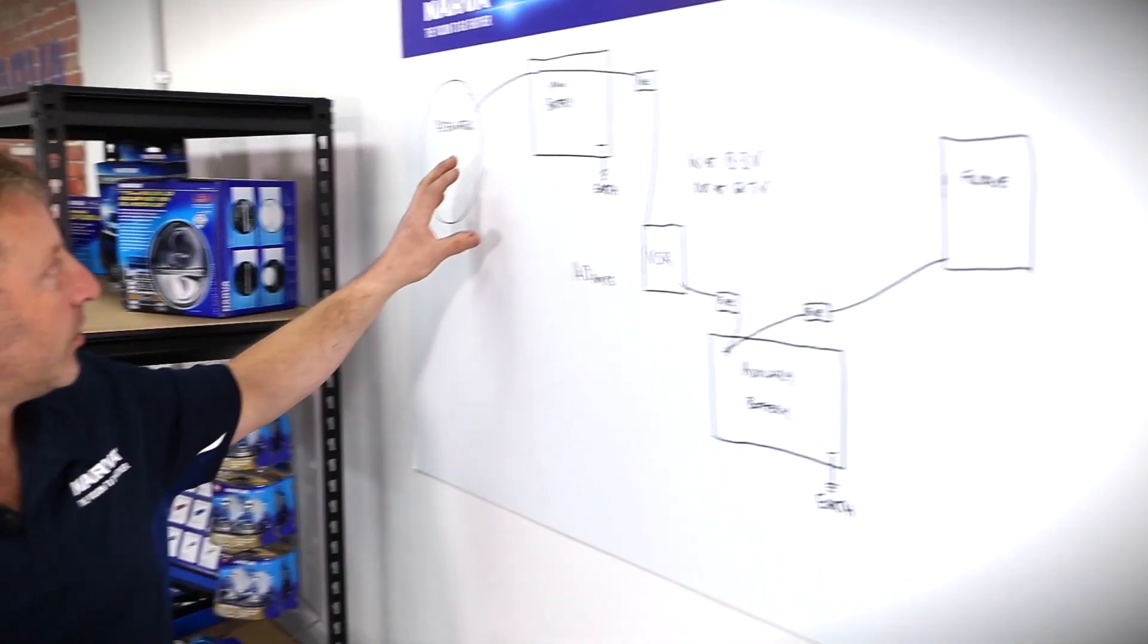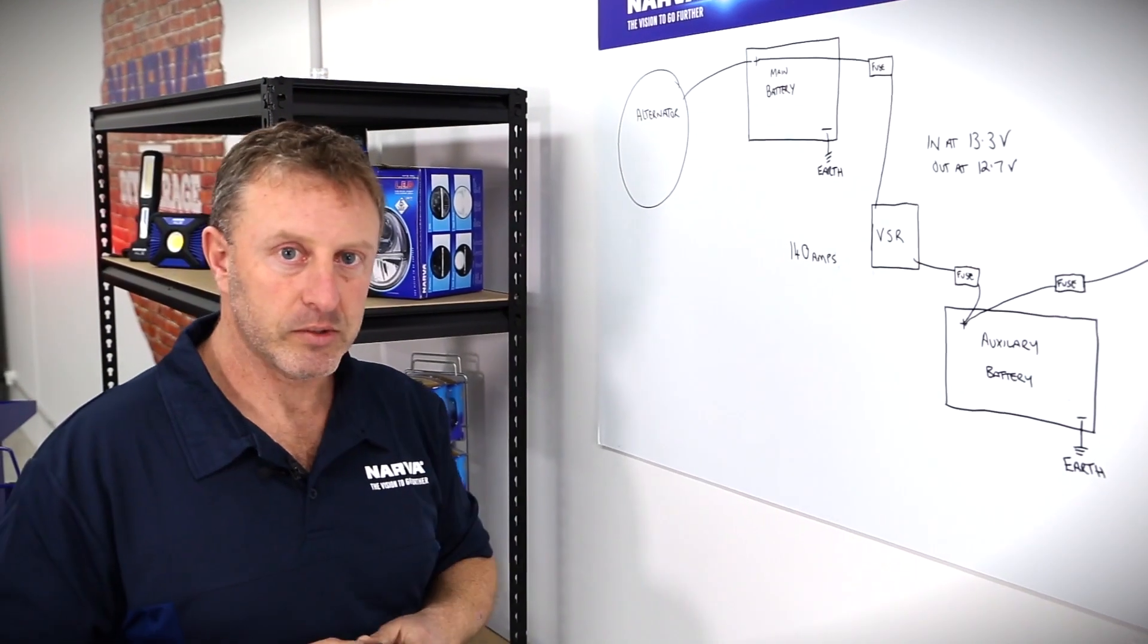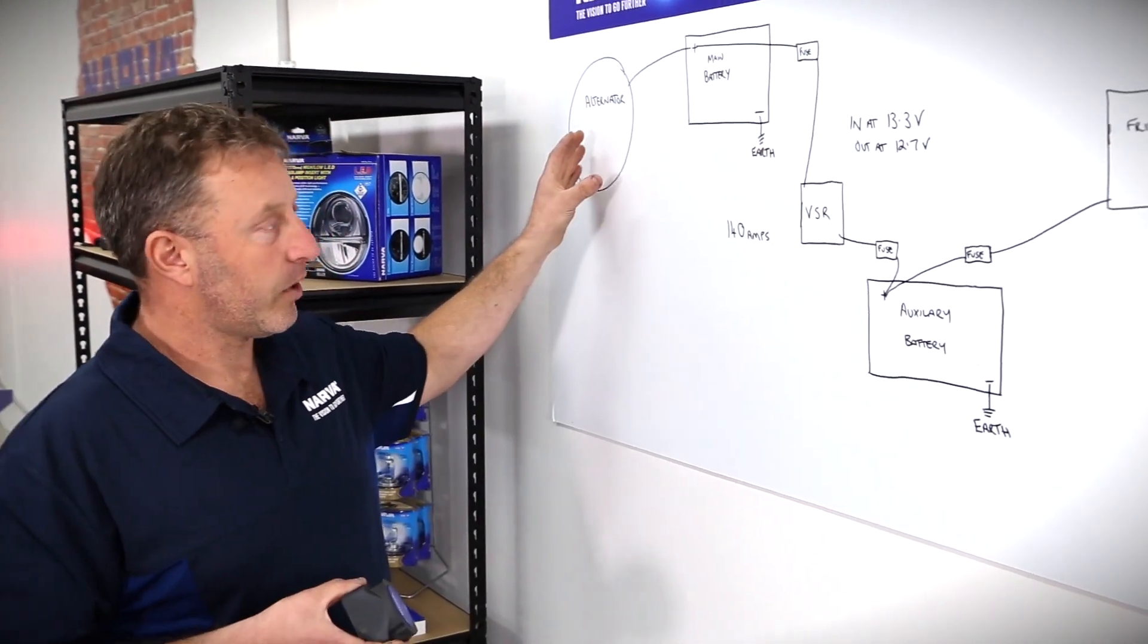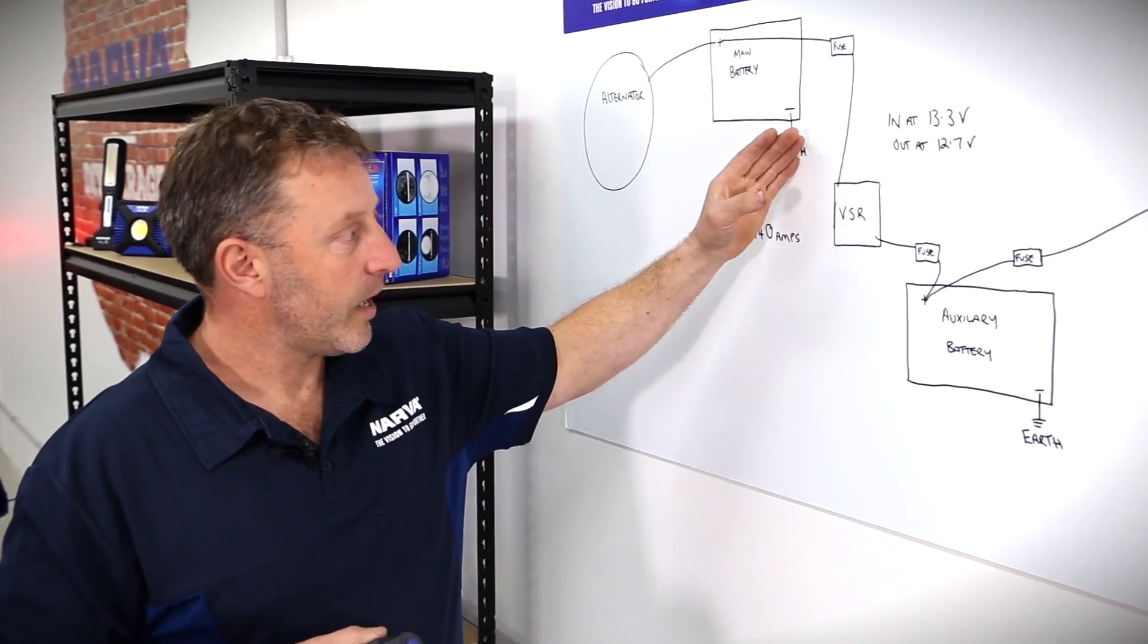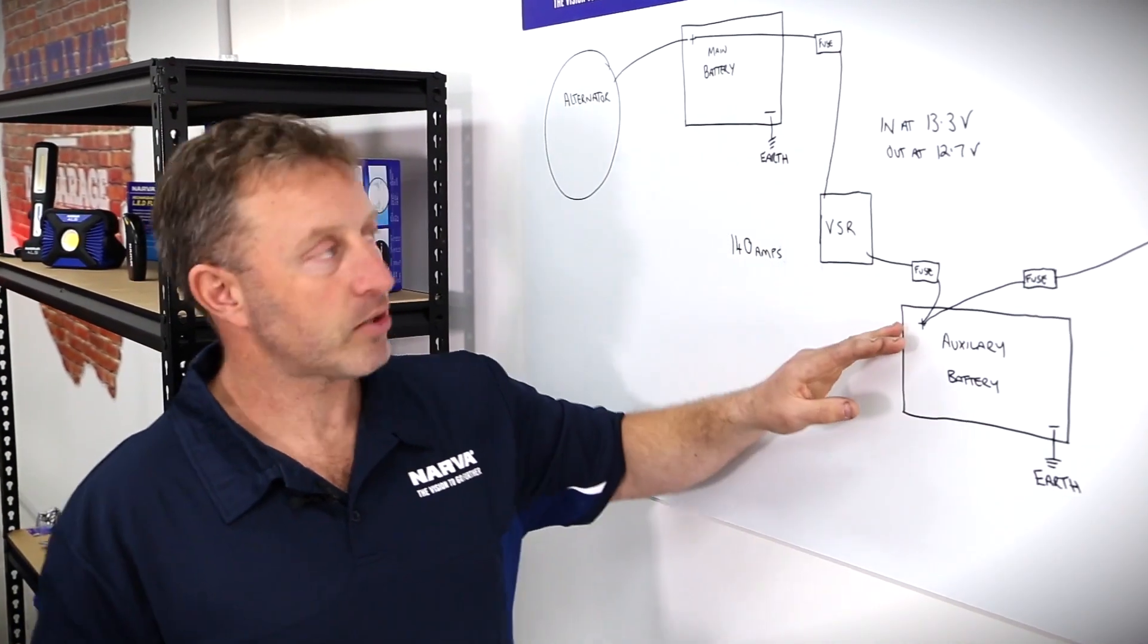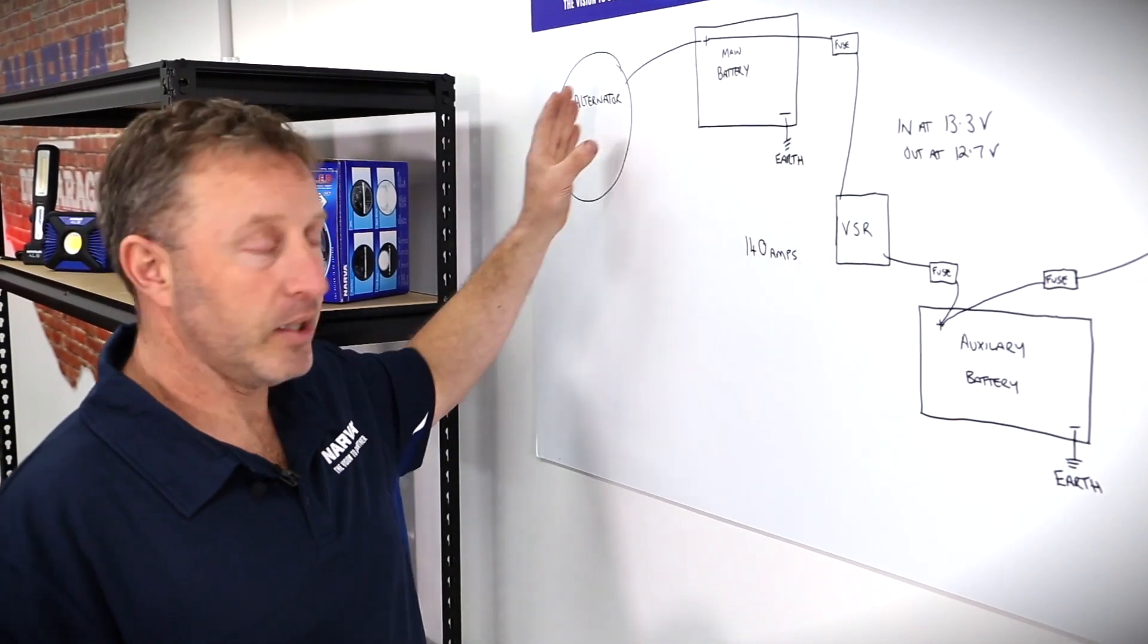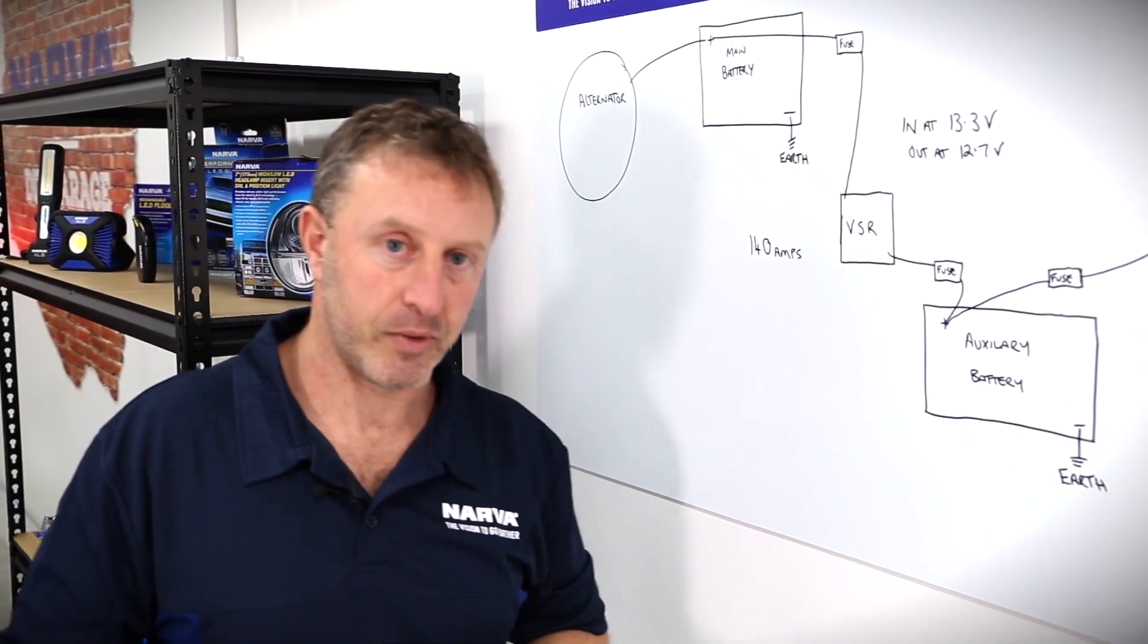How does a relay work? Well, basically when you start the vehicle and it runs, the voltage builds up. The relay will cut in at 13.3 volts and it will connect the auxiliary battery to the main battery so that both batteries will be charged from the alternator.